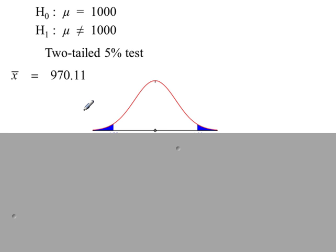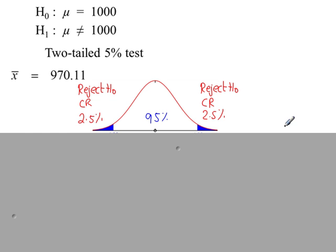So we split the 5%, with 2.5% in each tail, so 95% goes in the center. We have two critical regions where we reject H0, and we accept H0 in the center.